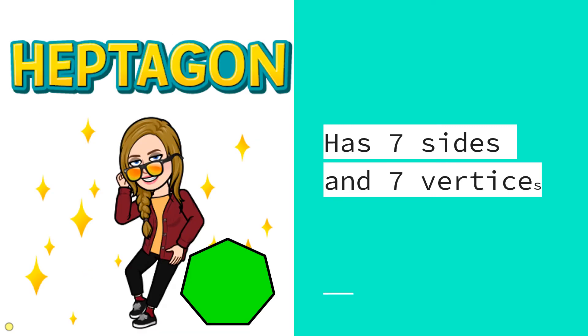Next up is a heptagon. A heptagon has seven sides and seven vertices.